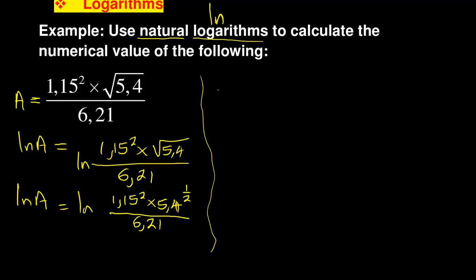When you're doing that, you can then continue using the laws. Ln A equals - we are introducing ln on the right hand side. You're going to say ln 1.15 squared. Now if it's multiplying, remember in ln you introduce plus, and then you say ln 5.4 to the power half, and when it's dividing you subtract ln 6.21.